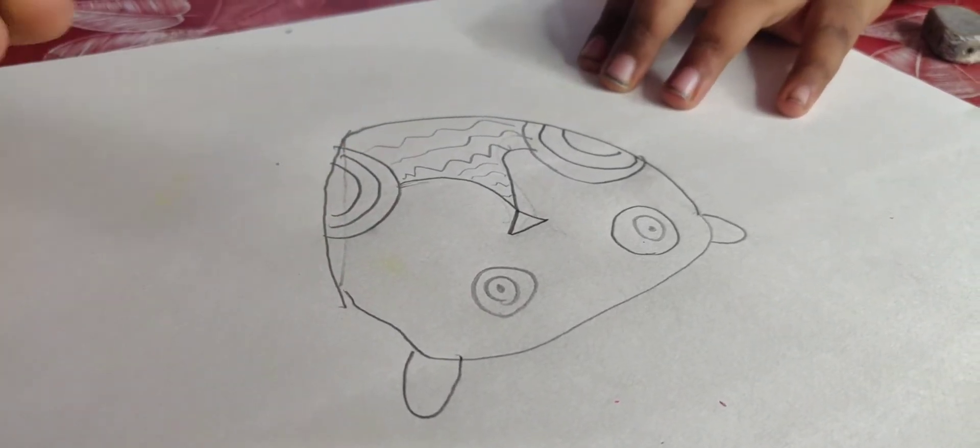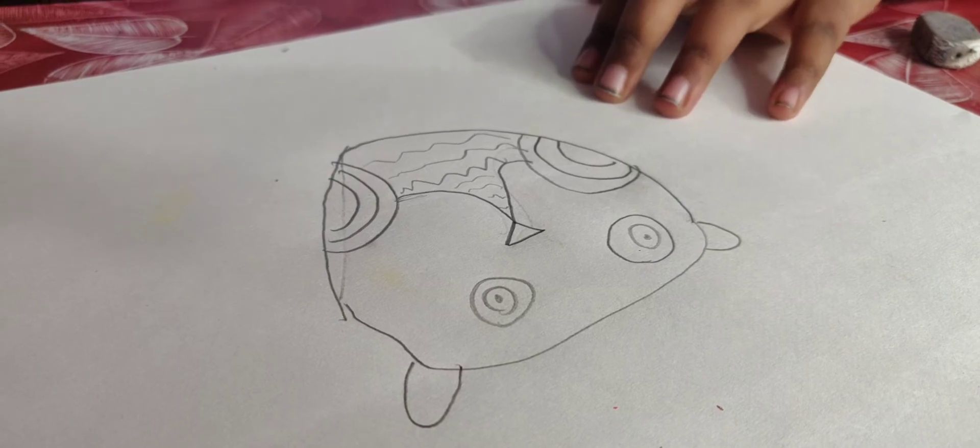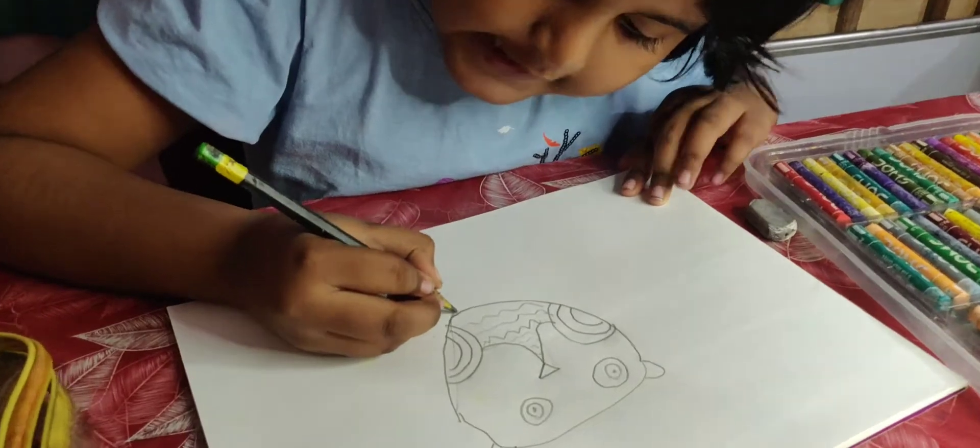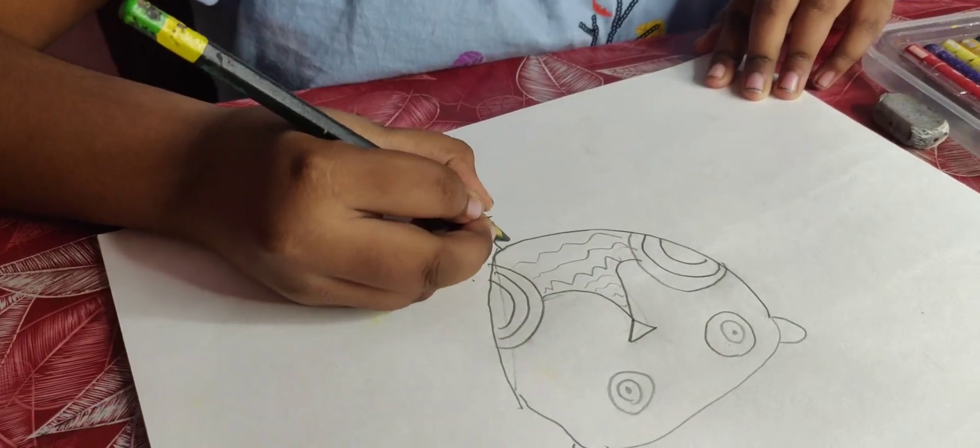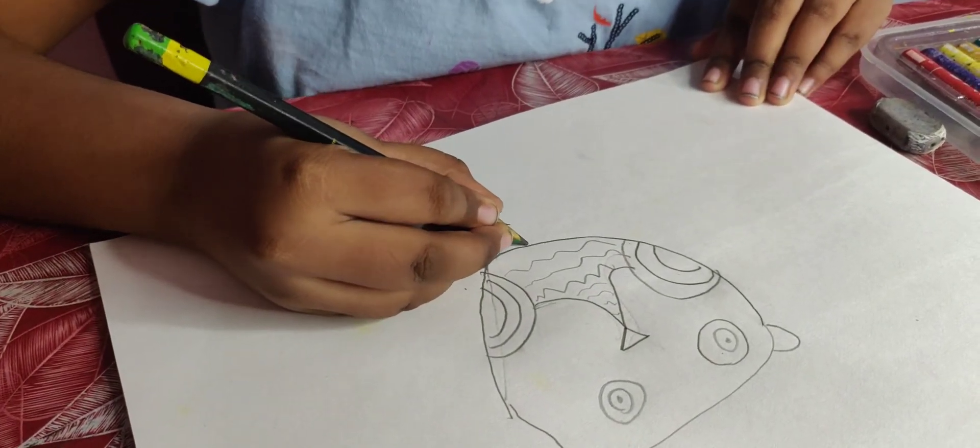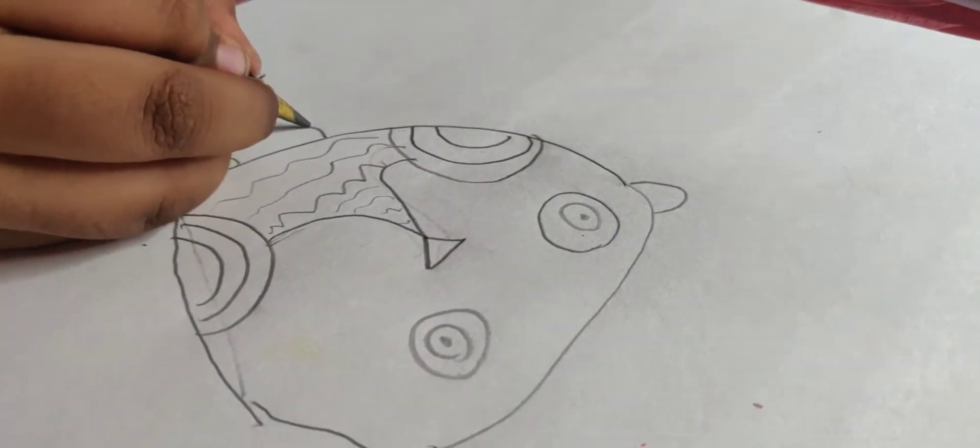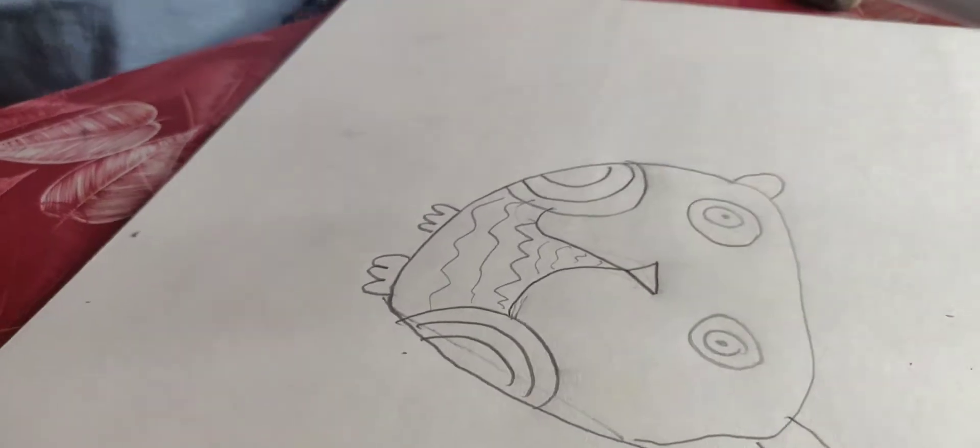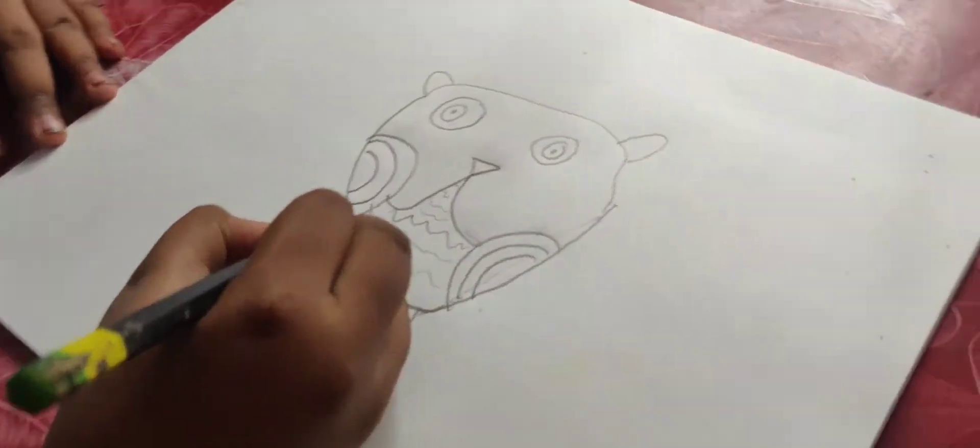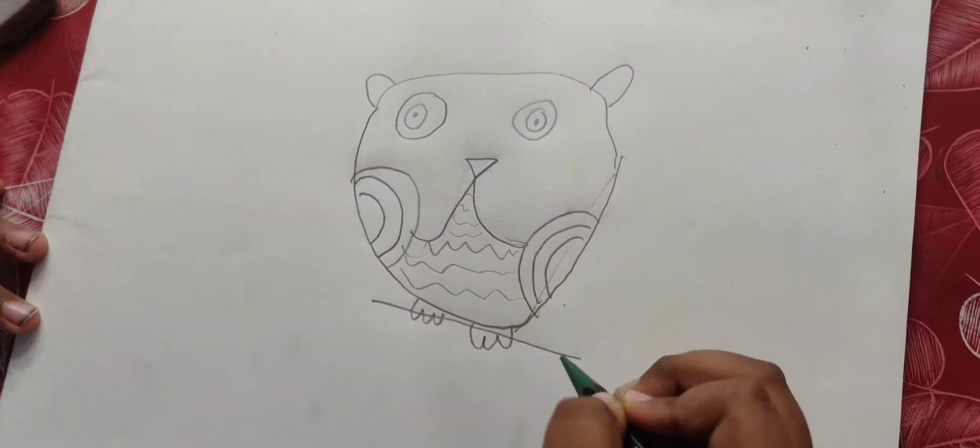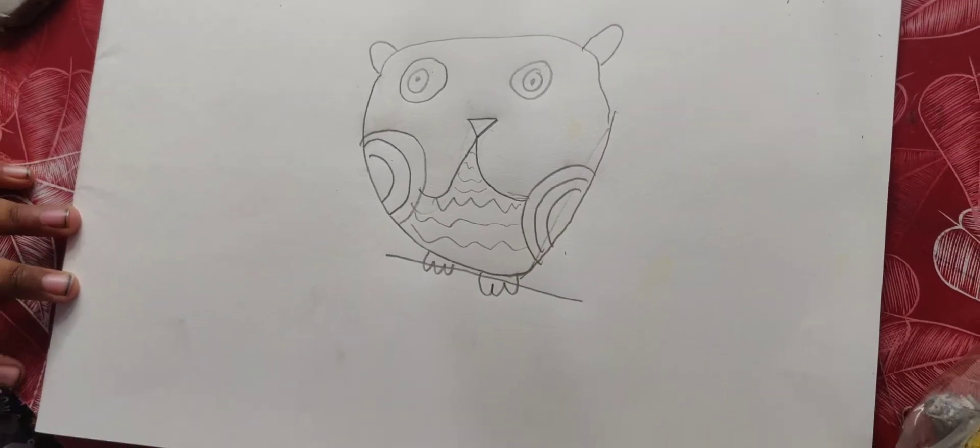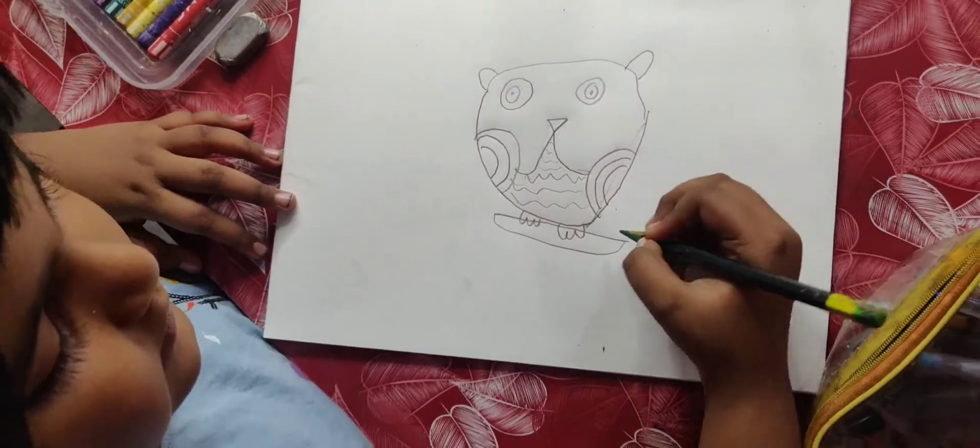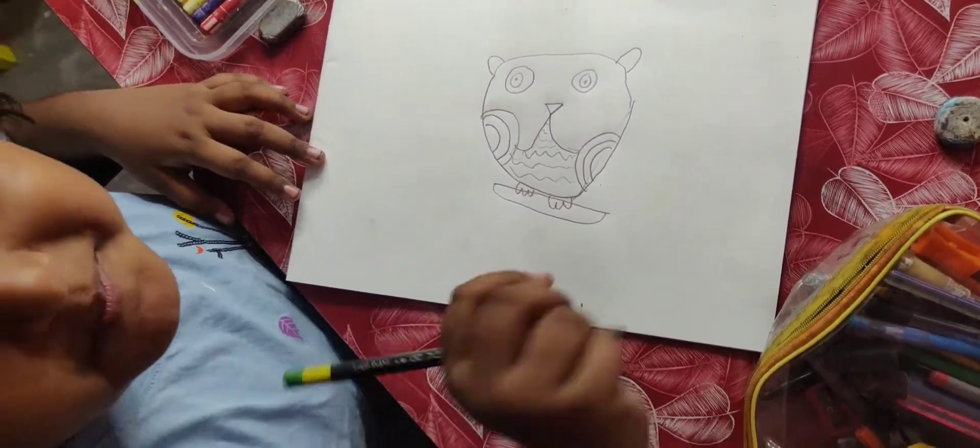Then we need to do the legs. Like this, like tree. Then make the branches. The owl is standing on the branch. Where is the tree? I am only doing the branch.